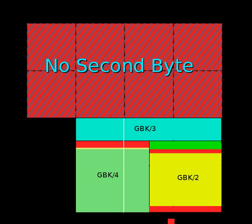GB abbreviates Guojia Biaozhun, which means National Standard in Chinese, while K stands for extension, Kuozhan.